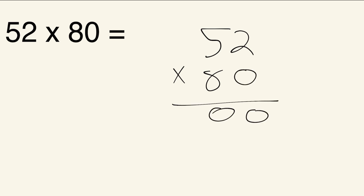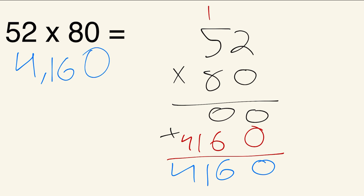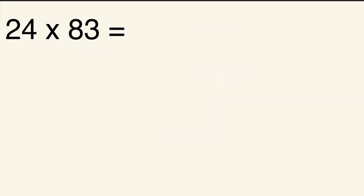Next: 52 times 80. Since we're multiplying by 0 first, both digits give 0. Add the 0, then 8 times 2 is 16 — write the 6, carry the 1. Then 8 times 5 is 40, plus 1 is 41. Adding: 0, 6 plus 0 is 6, then 41. So the answer is 4,160.